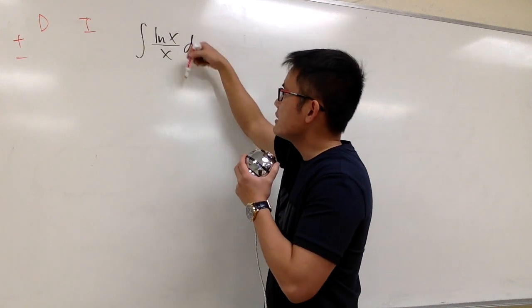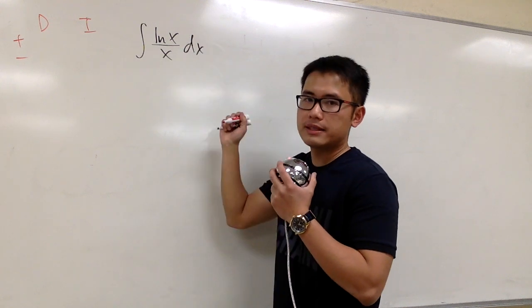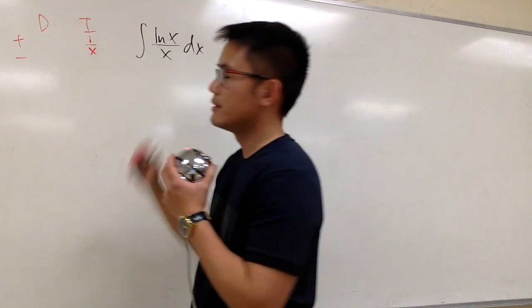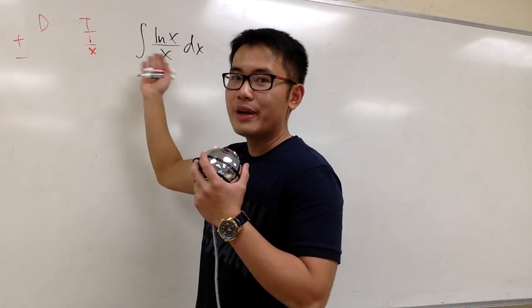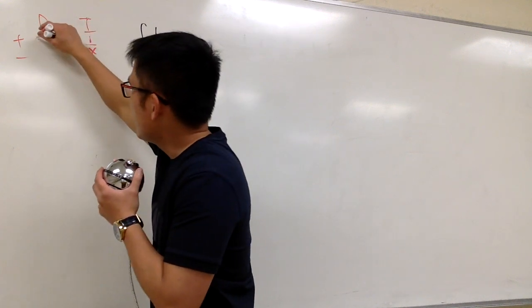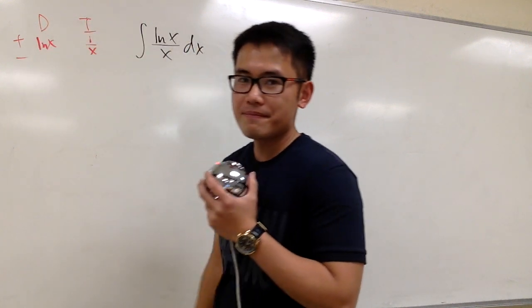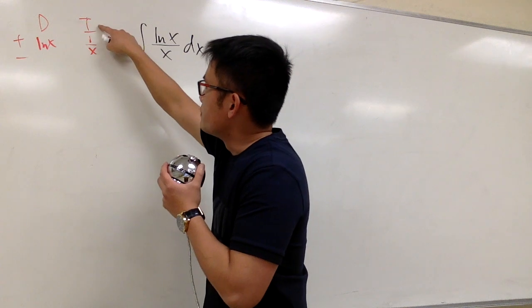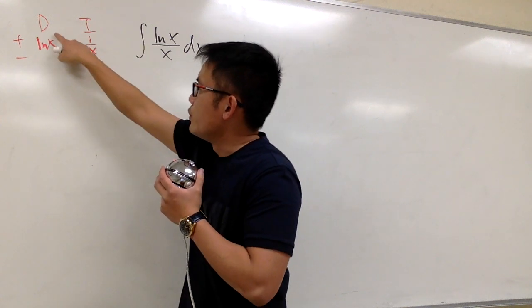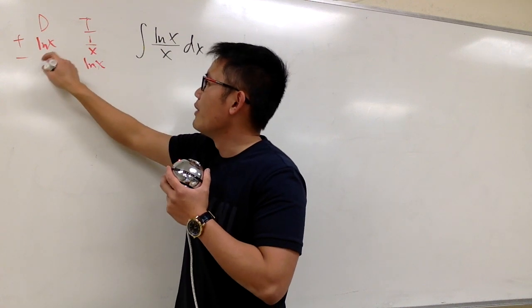We have two functions, ln x, and then the other one is 1 over x. Let me integrate 1 over x, because to integrate ln x will be much harder. You have to use integration by parts for that. Let me differentiate ln x. Integral of 1 over x is ln x, but then when you differentiate ln x, you get 1 over x.